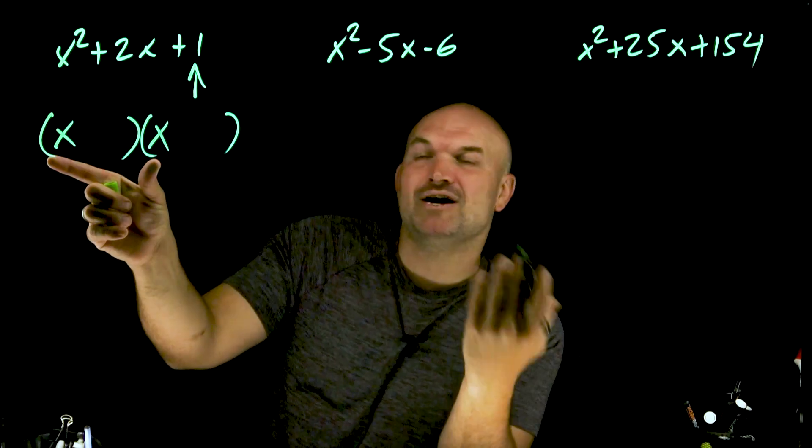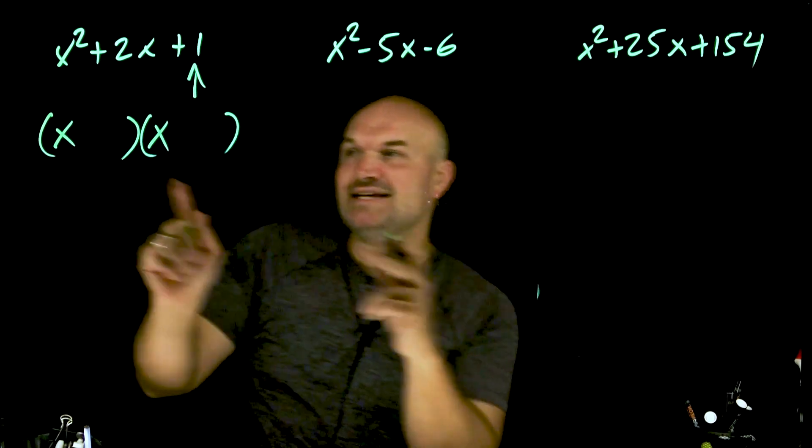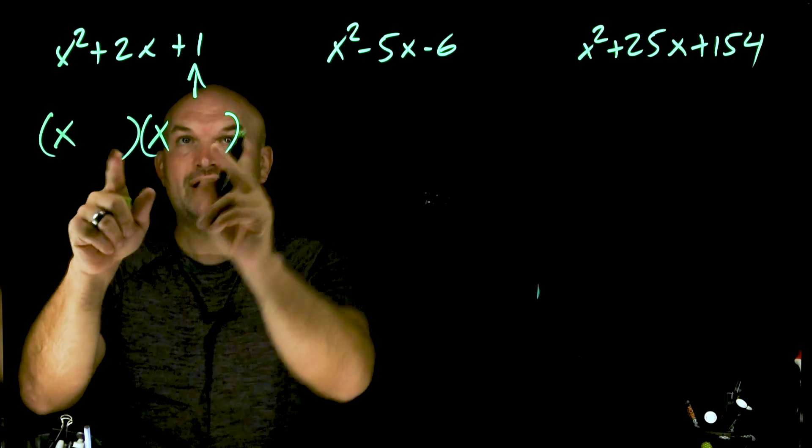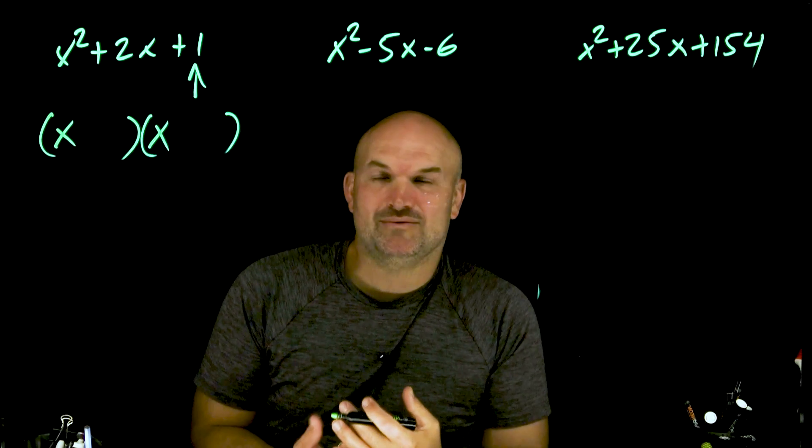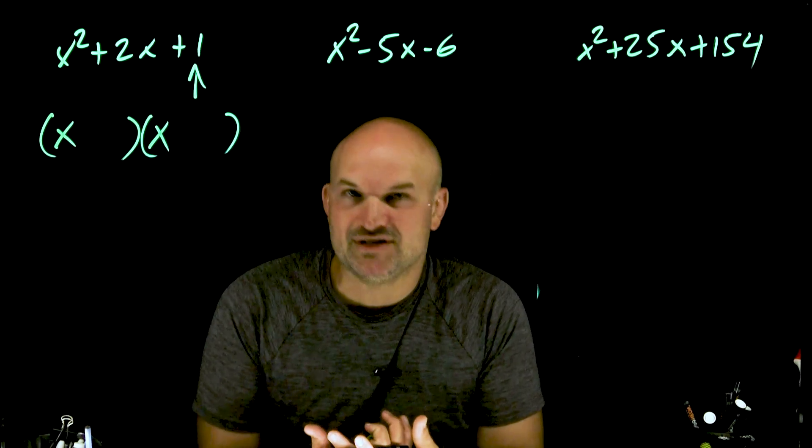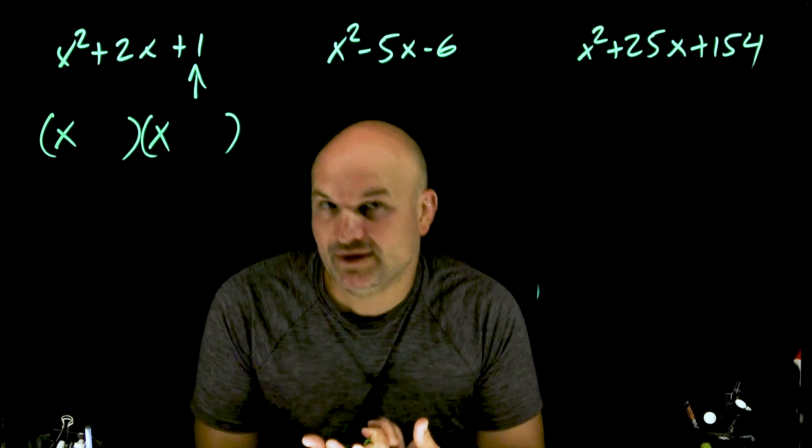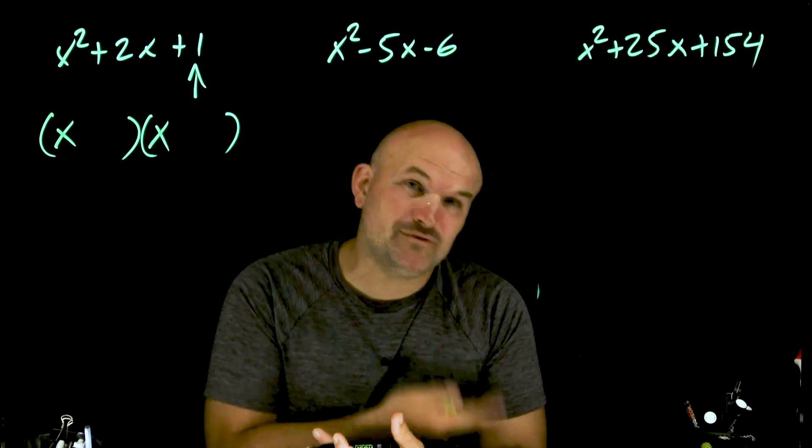Now for the last two terms of these binomials, they're going to multiply to give us our last term. That's why this is so easy, because what are our options for multiplying to give us a 1? It's 1 and 1, and also negative 1 and negative 1. So we really have two options.